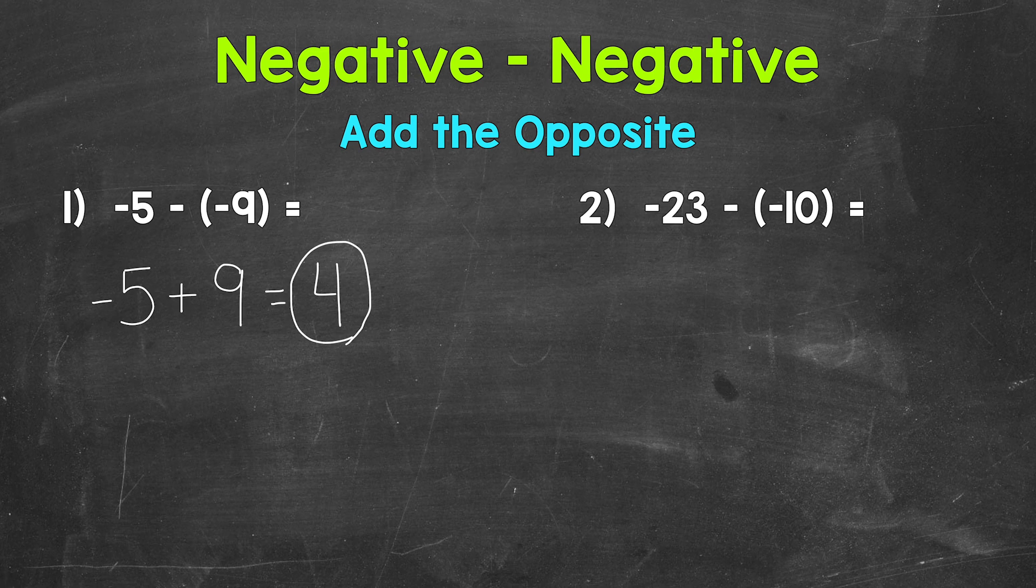Let's move on to number two where we have negative 23 minus negative 10. So let's rewrite this problem adding the opposite. So we start with negative 23 and then add the opposite of negative 10.